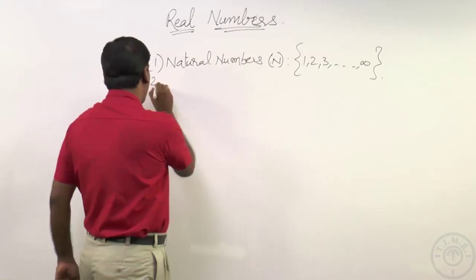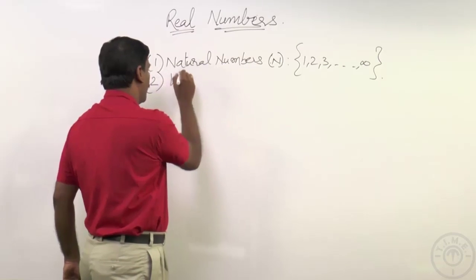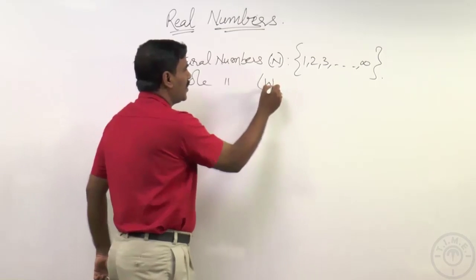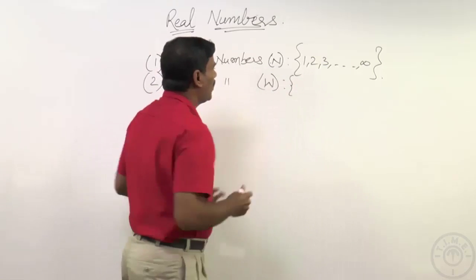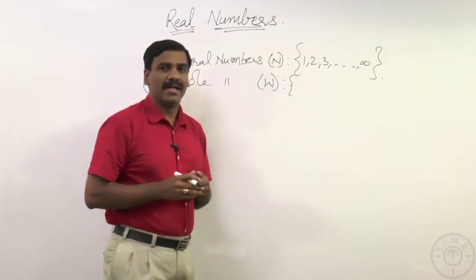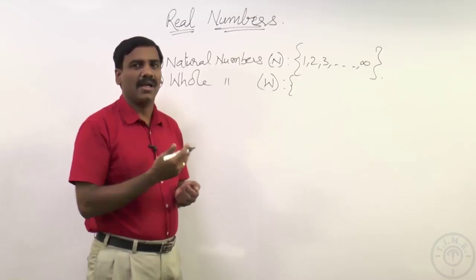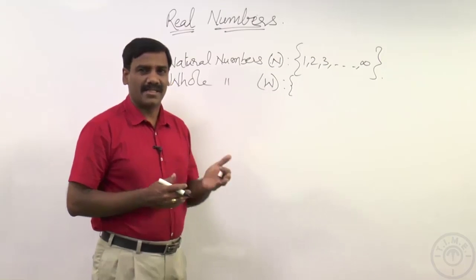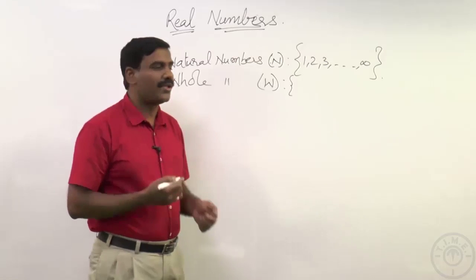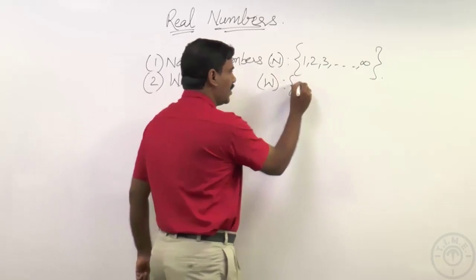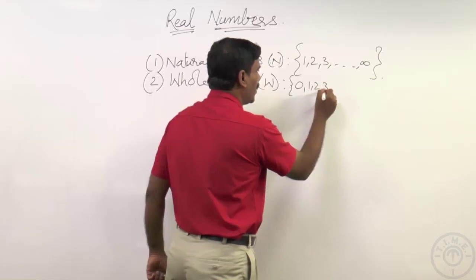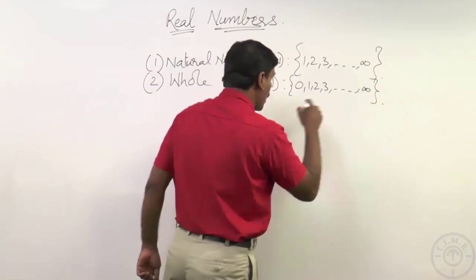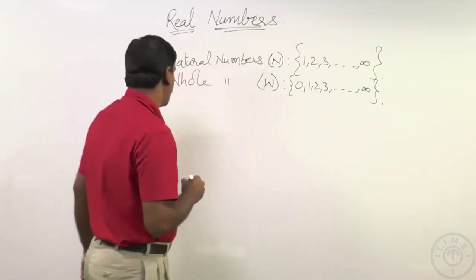Looking at the next classification: whole numbers. If you include zero in the set of natural numbers, whatever set we get, we consider that as the whole number set. Already one, two, three, four, and so on up to infinity are natural numbers. If you include zero, it becomes the set of whole numbers — so zero, one, two, three, and so on up to infinity is the set of whole numbers.